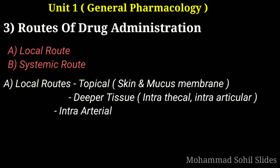Factors for route selection: first, physical and chemical properties of the drug; second, emergency versus routine use; third, condition of the patient such as unconscious patient, diarrhea, and vomiting; fourth, age of the patient; and fifth, effect of first-pass metabolism. Classification: routes are divided into local and systemic. Under local, there are three types — topical (used for skin and mucous membrane), deeper tissue (which includes intrathecal, intraarticular, and retrobulbar), and intraarterial route.